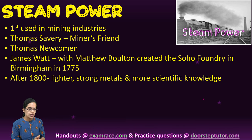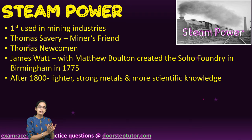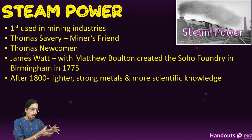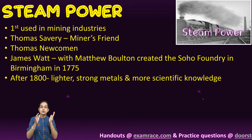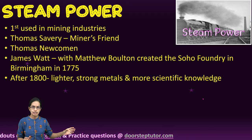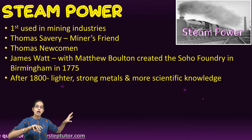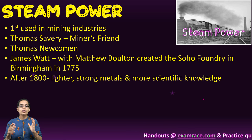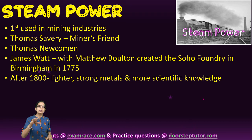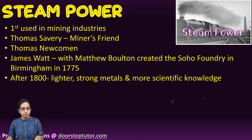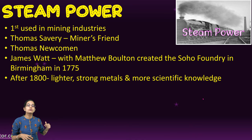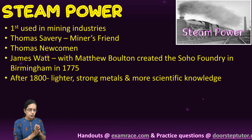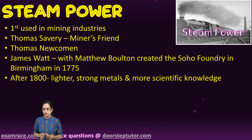James Watt developed his machine in 1769, converting pumps into movers — steam power could now not only pump but also move power machines on factory floors. This was the moment steam power moved from the mining industry into factories. Watt's idea was then pushed forward by wealthy industrialist Matthew Boulton, and together they created the Soho Foundry in Birmingham, which began producing large numbers of steam engines.